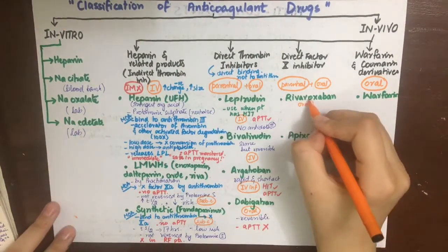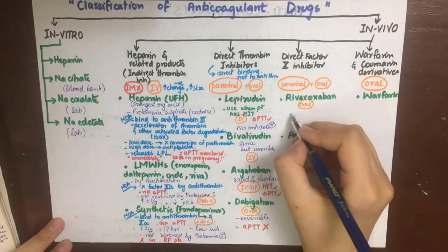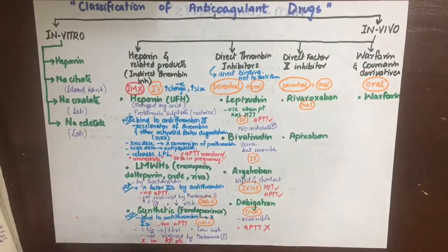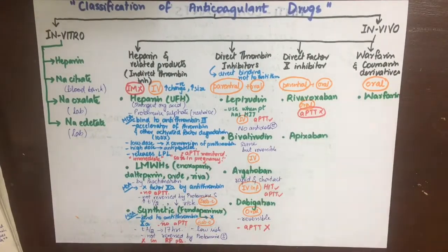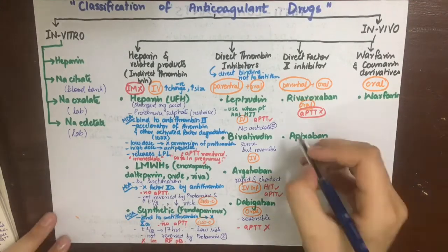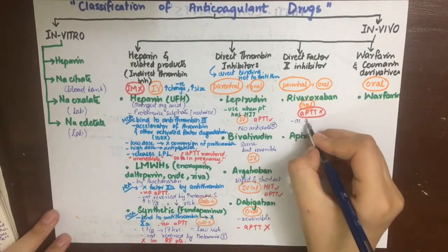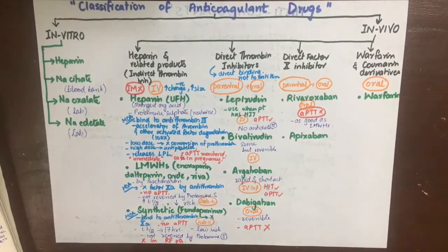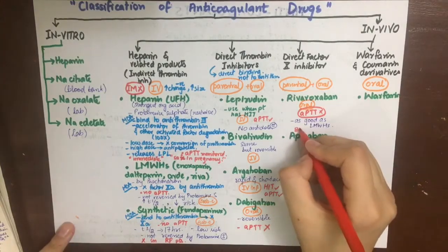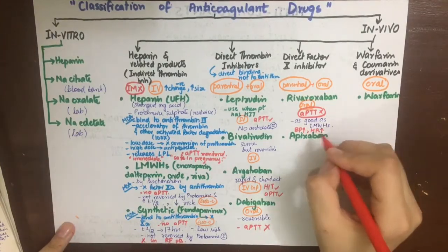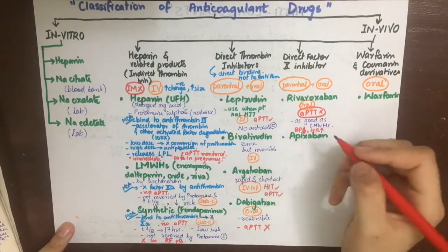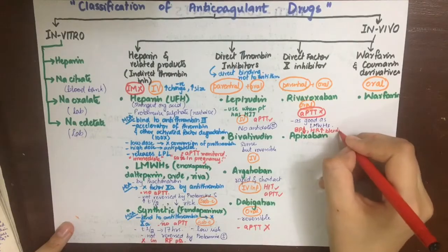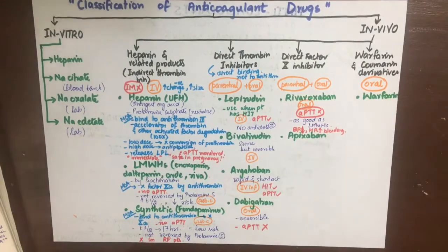Coming to the direct factor 10 inhibitors: rivaroxaban is given orally and no APTT monitoring is required. It is as efficacious as low molecular weight heparins. Side effects can include bleeding, tachycardia, and decreased blood pressure.